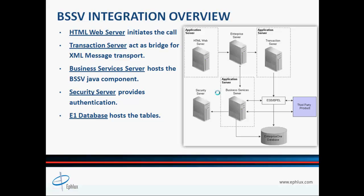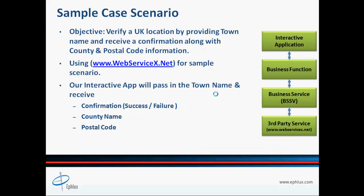Once the data is received from the third-party service provider, the business service returns the data back to the business function through XML message transport, and the business function returns it back to the interactive app. The security server in this equation provides all the required authentication, whereas the EnterpriseOne database serves as the hosting ground for all the E1 tables.